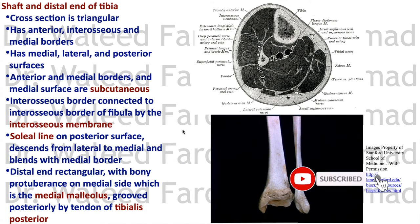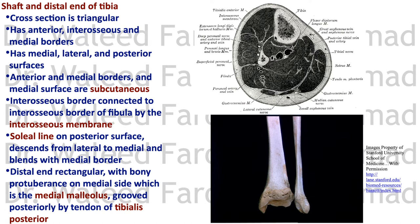We've studied the proximal ends of the tibia and fibula; now it's time to look at the distal ends. The cross-section of the tibia is triangular. It has an anterior border, medial border, and an interosseous border. It has medial, lateral, and posterior surfaces, and observe that the medial surface is subcutaneous.